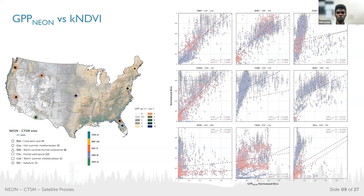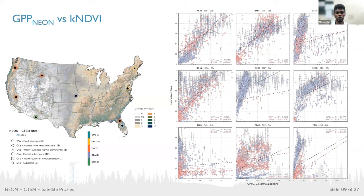When we overlay the kNDVI proxy, it shows a dynamic relation at different PFTs, though there are data gaps because MODIS data swap is around 8 days. For some panels, we couldn't establish a proper relation due to data gaps, but for grassland sites the relationship is very good. Similarly, on the top right panel, there is a very good relation with both observations and CTSM.